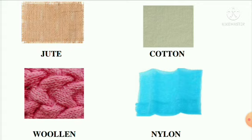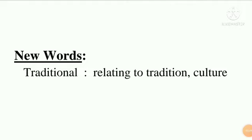After the diagram, write the heading 'New Words' and underline it. There is only one new word in this chapter: 'traditional'. The meaning of traditional is relating to tradition or culture — things which belong to our traditions and culture are called traditional things.